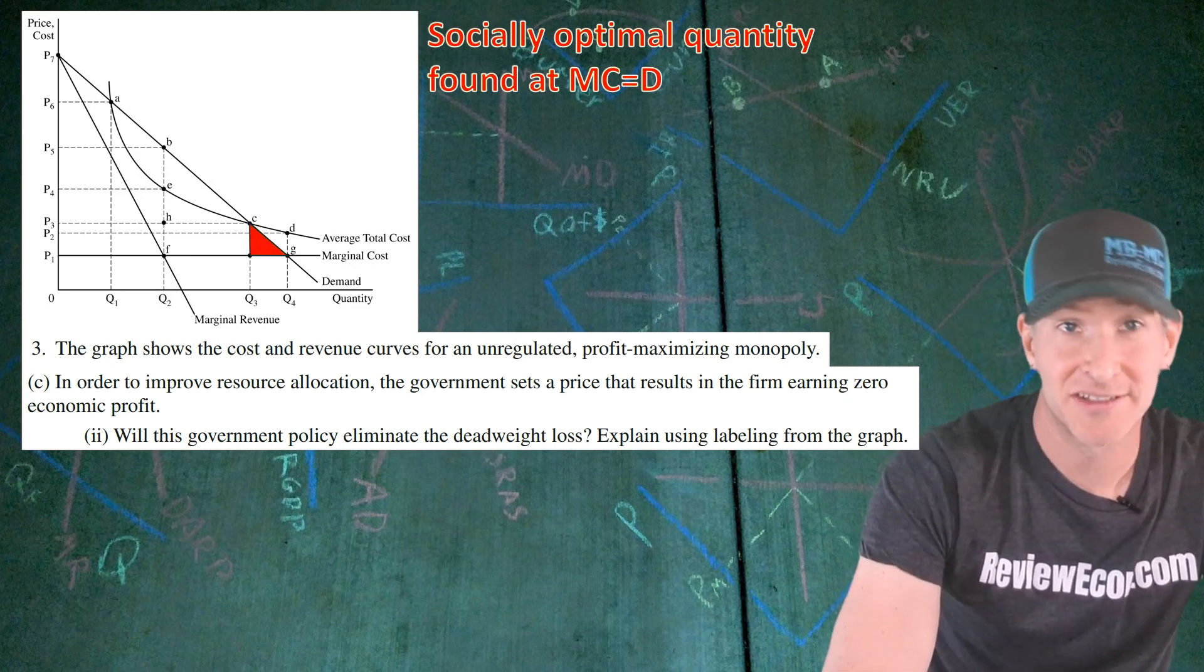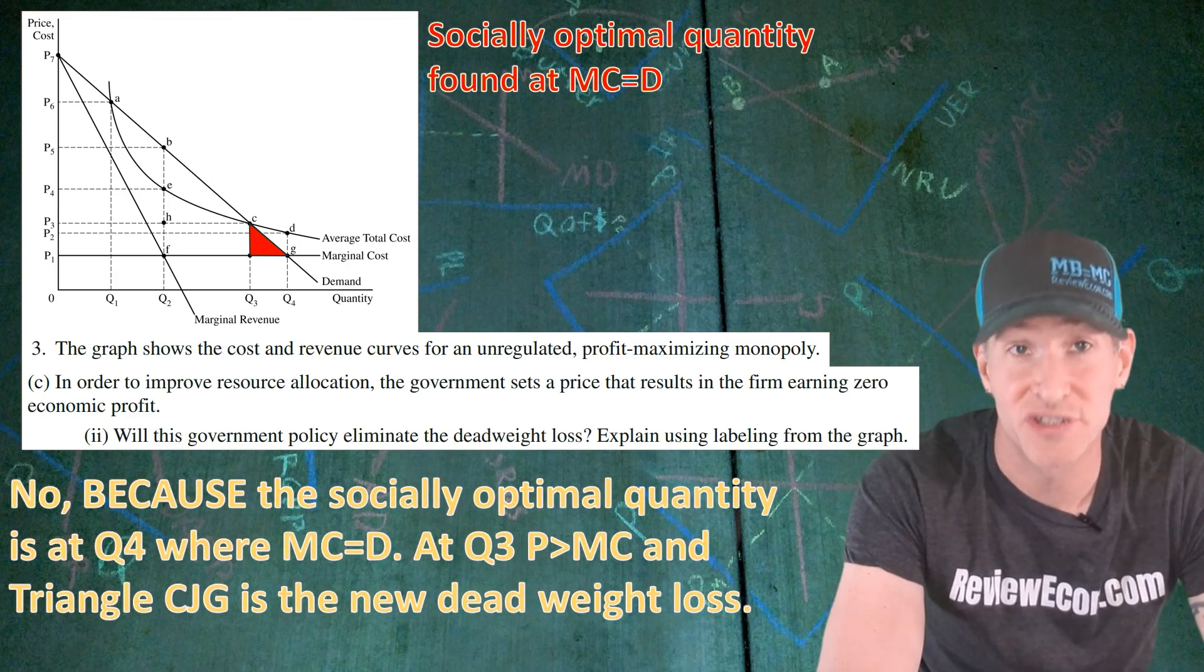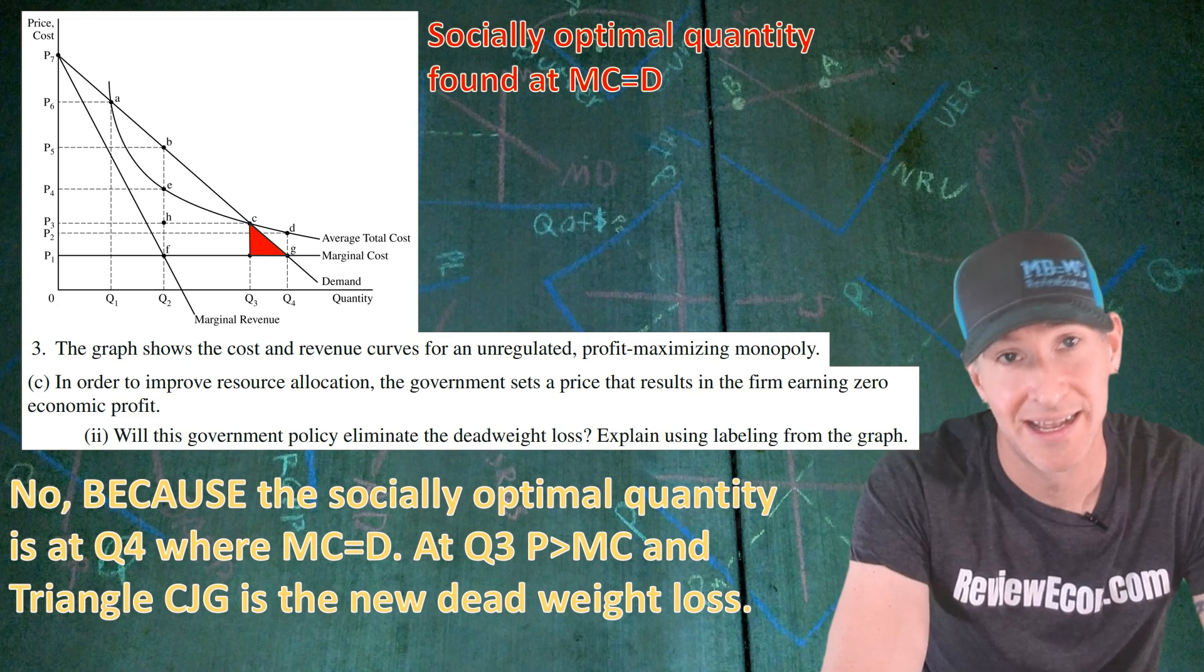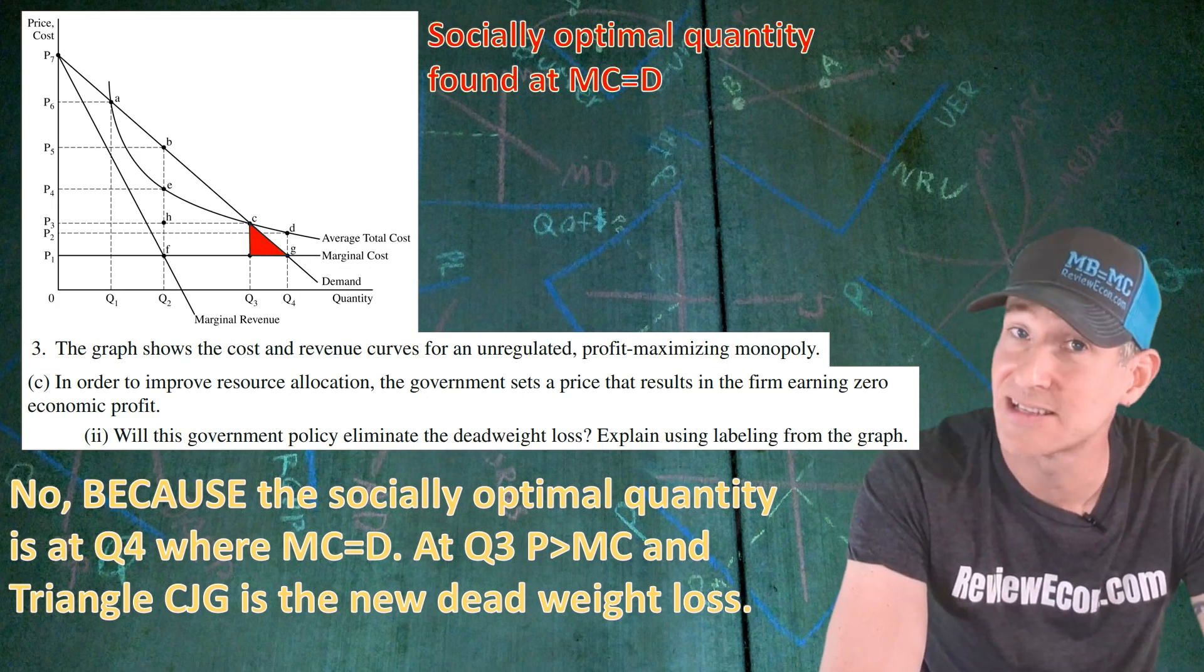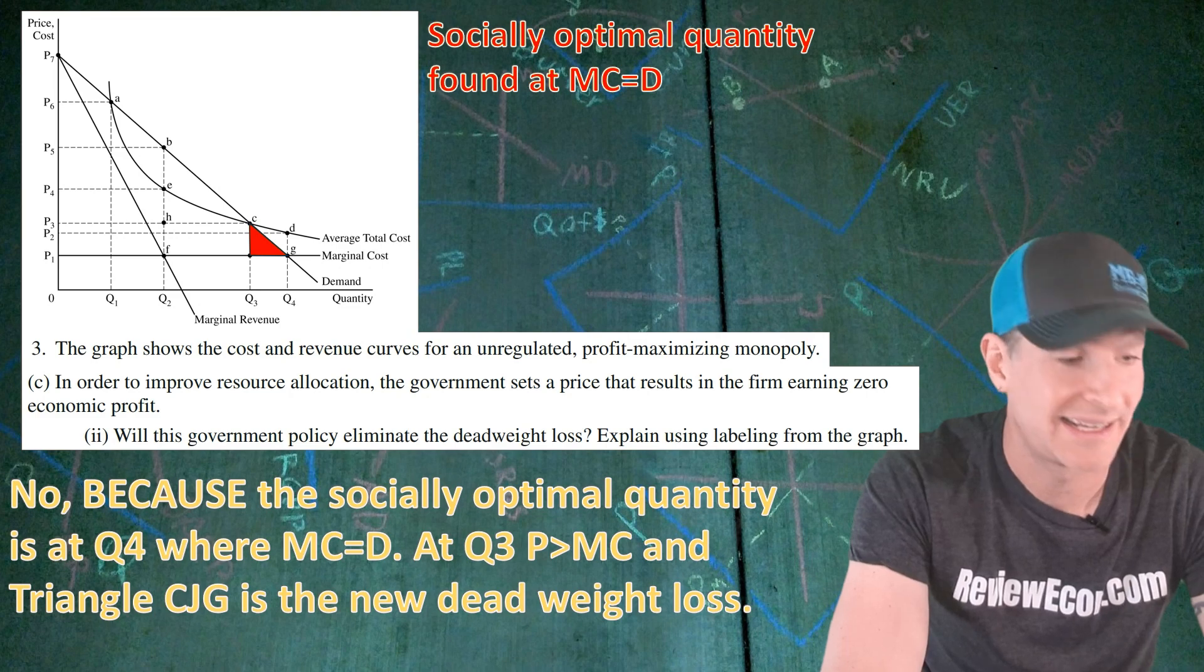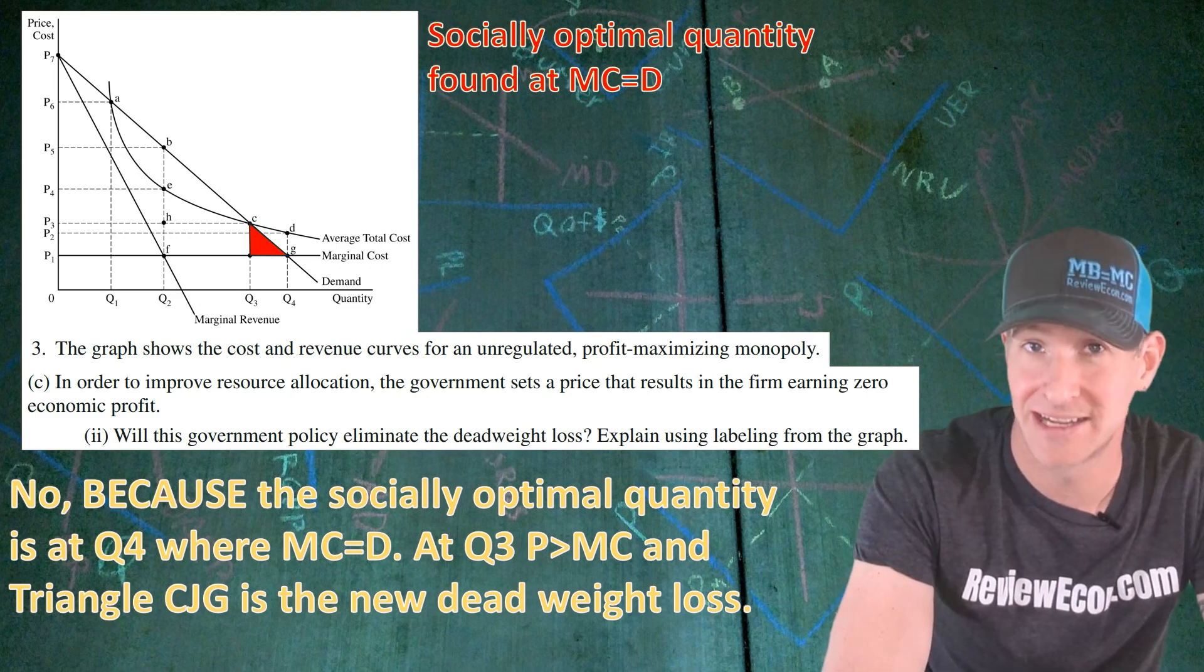It's a smaller triangle of deadweight loss but it's still there. So that leads us to our answer here: no, because the socially optimal quantity is at Q4 where MC equals D, and at Q3 price is greater than marginal cost and the triangle of CJG is the new deadweight loss. If you have an answer something like that, you get your next point.